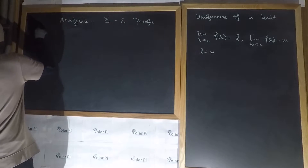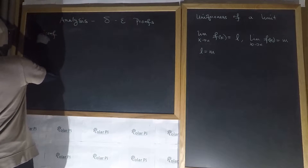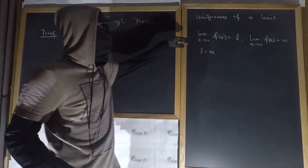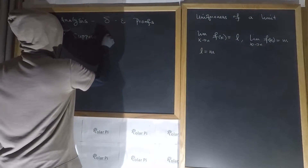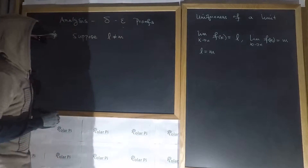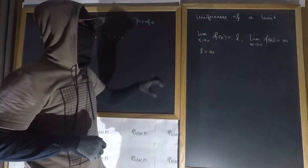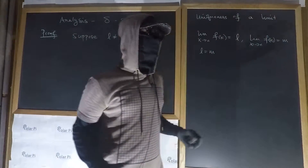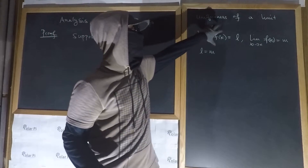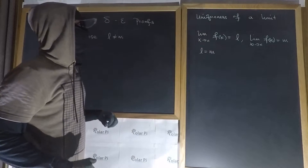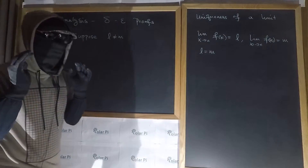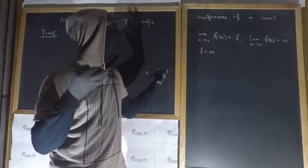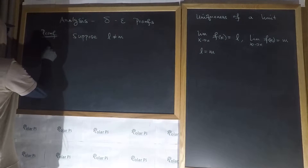This is a proof by contradiction. So suppose the contrary — suppose that both limit statements are true, but that L is not equal to M. If L is not equal to M, then two different limit statements are satisfied. And using the delta-epsilon limit definition, we can translate both of these statements as follows — what I'm about to write is simply the translation of these two statements using the delta-epsilon limit definition.